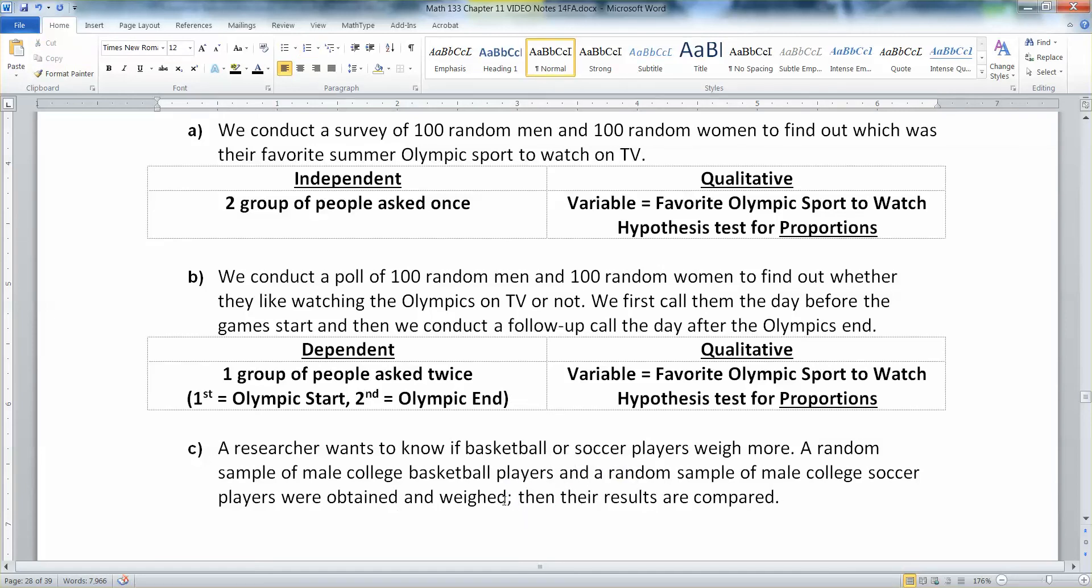Well, that would be weighing, first of all. So, like, how much do you weigh? That's a quantitative variable. And they're independent of each other. These are random samples of soccer and basketball players. They're not going to have any bearing on each other. So this would be independent.